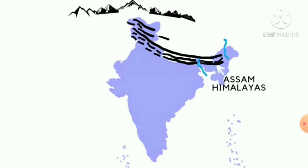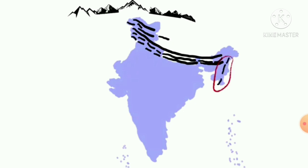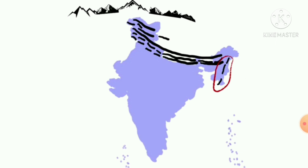There are four major divisions of the Himalayas from east to west. You can remember that. The Himalayas also run from north to south and there are three important ranges. If you look at the map, the Himalayas are divided from north to south as well.